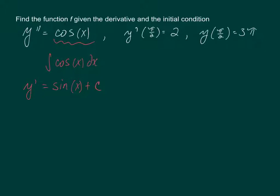Now this notation over here doesn't get used too frequently, but this means if you substitute pi over 2 into the first derivative you'll get back a positive 2. So looking at that, if we evaluate this derivative, y prime of pi over 2 equals the sine of pi over 2 plus C. But this is also equal to 2.